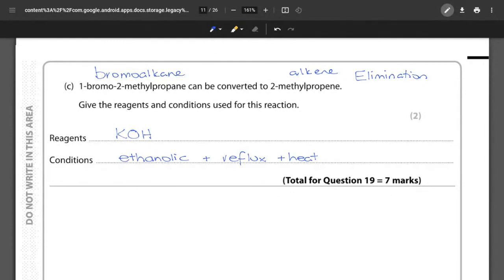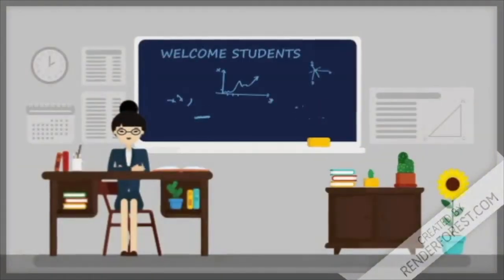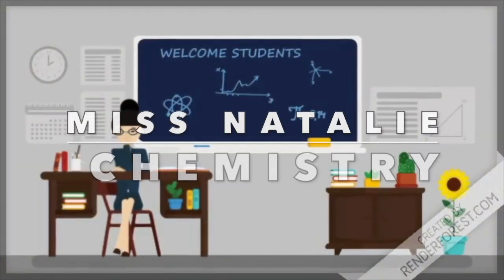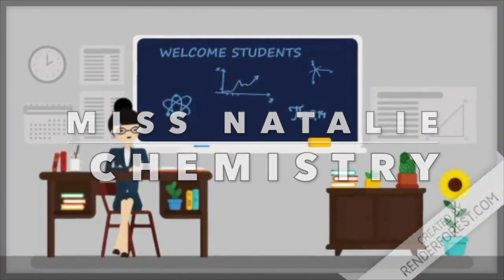That is seven marks in total looking at nucleophilic substitutions and the reactions to convert between bromo-alkanes and alcohols. Check back on the playlist for the remaining questions in this paper. If you've got any questions about this particular question or any of the marks, please feel free to leave a comment below. I'll see you next time.